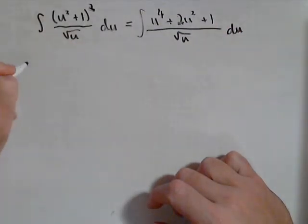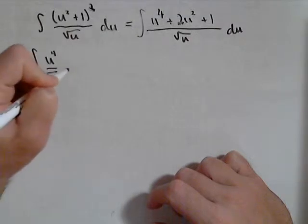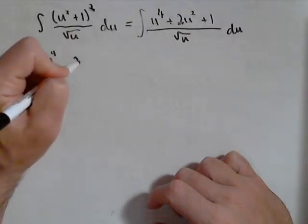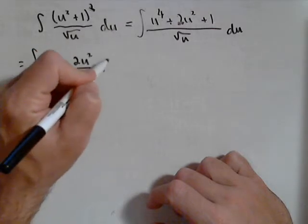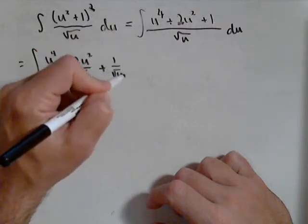Now what I'm going to do is I'm going to write each of those over the square root of u and I'm going to split it up: u to the fourth over square root of u plus two u squared over square root of u plus one over square root of u, du.